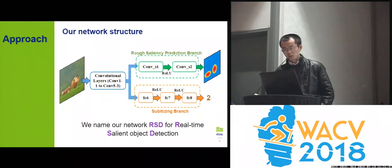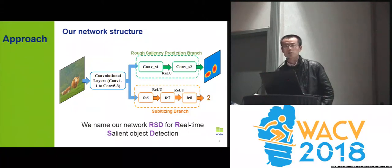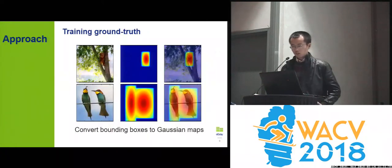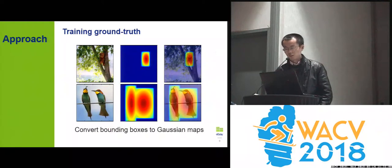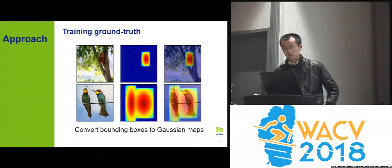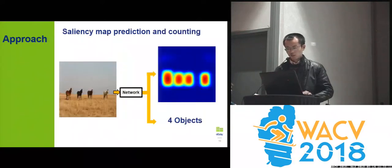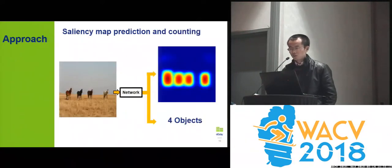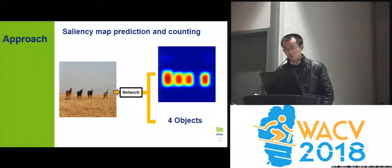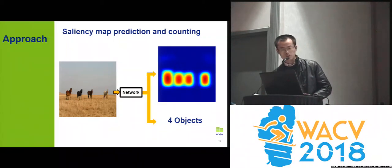This unified framework addresses three closely related problems — saliency map prediction, subtizing, and salient object detection — without allocating separate resources for each. Our network is trained with Gaussian distributions centered at ground truth salient objects, which are considered more informative and discriminative than bounding boxes to distinguish between multiple objects. Our network directly predicts a saliency map with Gaussian predictions centered at the salient objects while also outputting the number of salient objects in the given image.